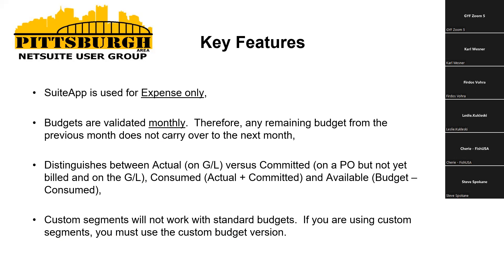The budgets are validated monthly. Any remaining amount from the prior month — so let's say your prior month you were above budget — the next 11 months, if you start in January, you're going to be squeezed a little bit. This is not going to carry over any of that into the new month, so be cognizant of that. It's going to distinguish between actual — what's posted on your GL already — your committed, which is on a PO but not yet approved or billed, so it hasn't hit the GL. Your consumed, which is a combination of your actual plus committed, and then it'll show you what is remaining: your budget minus your consumed.